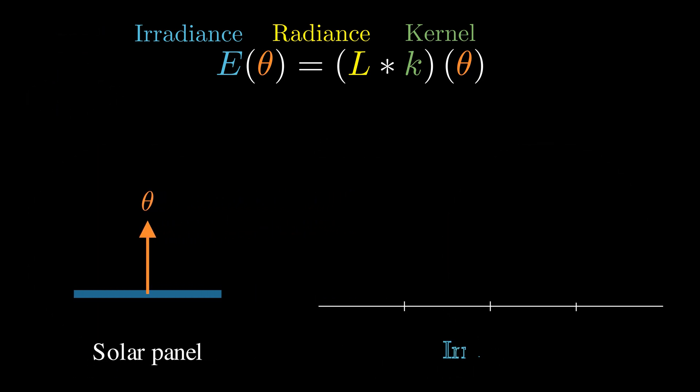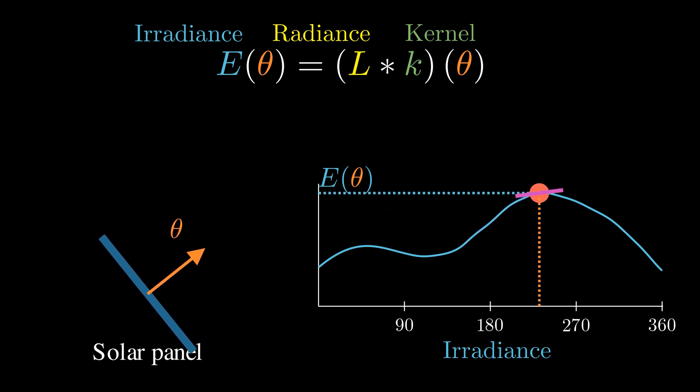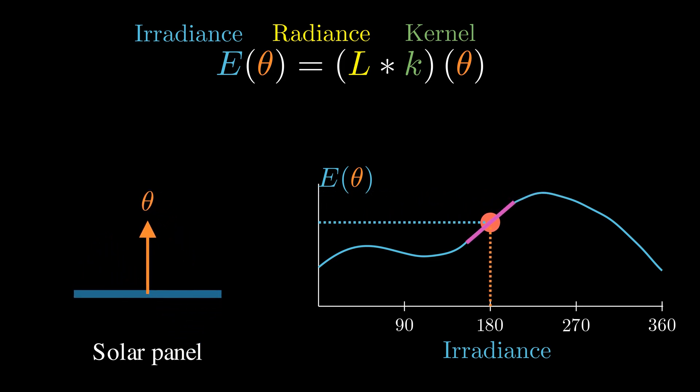So what can we do instead? Let's go back to our goal. We want to find the orientation that maximizes the total irradiance. Suppose we start with an initial orientation, and somehow we know the gradient of this irradiance function at that point. Then we can simply follow the gradient, adjusting the orientation θ step by step in the direction that increases irradiance. This method is known as gradient ascent.